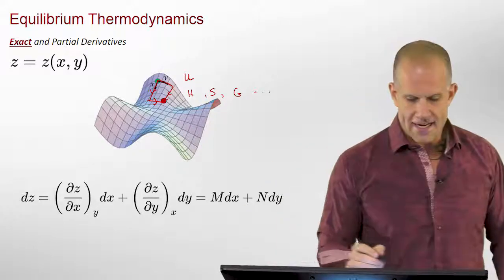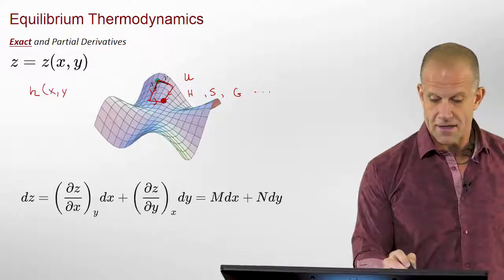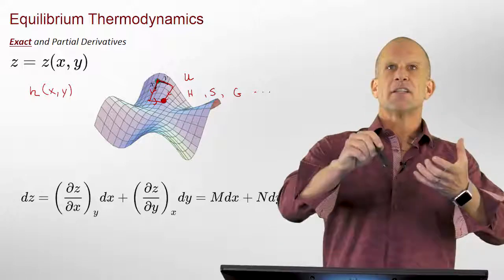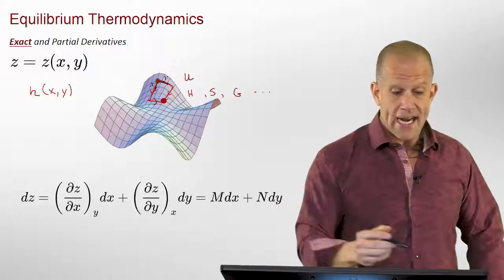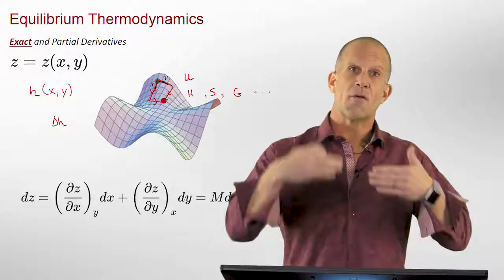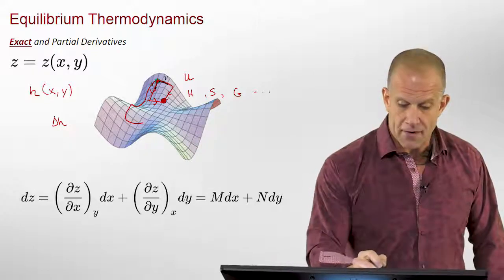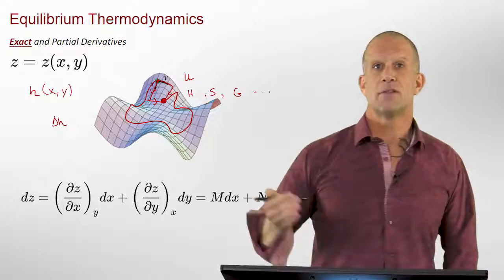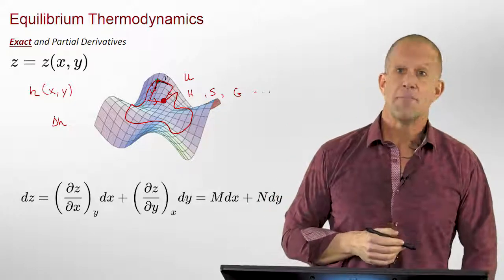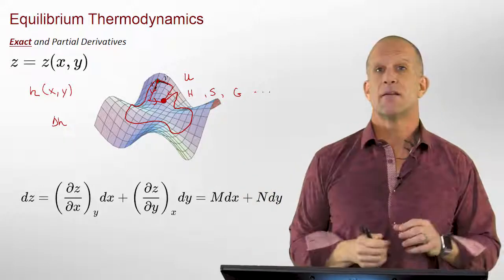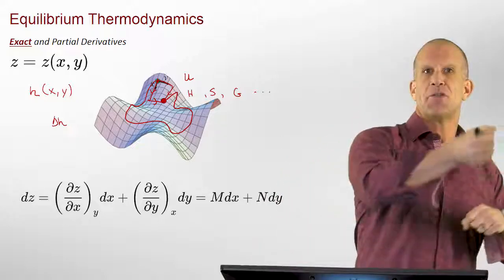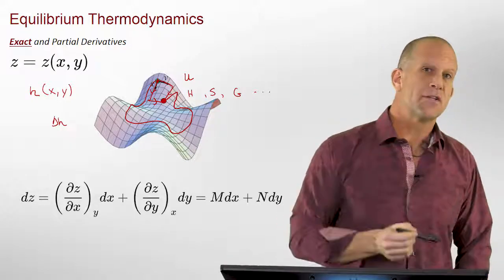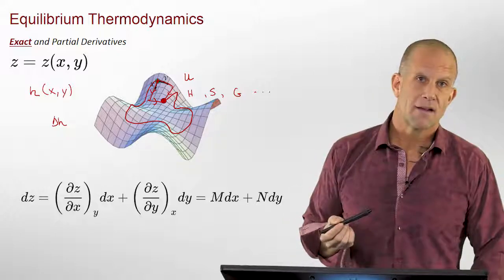The analogy I like to use is the height of a system, which can depend on x and y coordinates. If you pull out your altimeter and you're going from one point to some other point, you're going to get the same change in height — the same change in altitude from one to the other — no matter what path you take. It doesn't matter if you take some really crazy path; you're still going to end up at the same change in altitude from one place to the other.